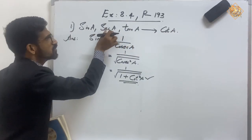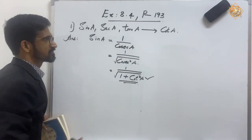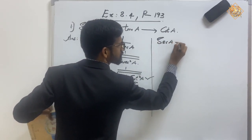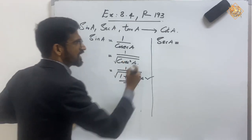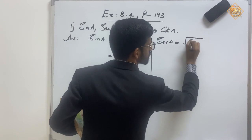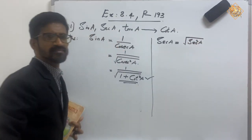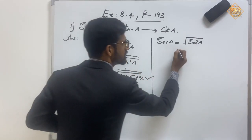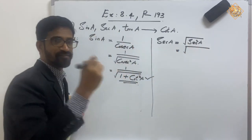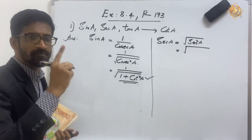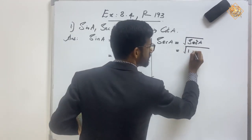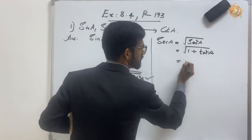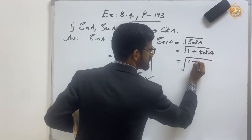Next, we have to express sec A in terms of cot A. Similarly, we can write sec A as root of sec² A. We know the identity sec² A = 1 + tan² A, so sec A equals root of (1 + tan² A).